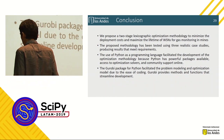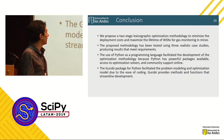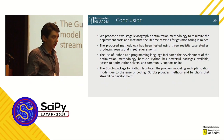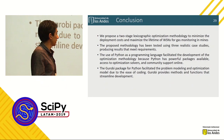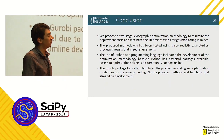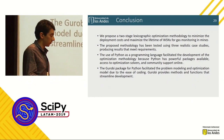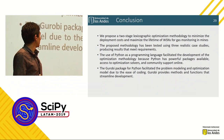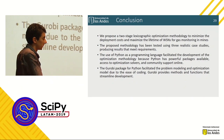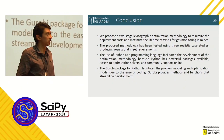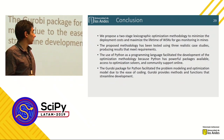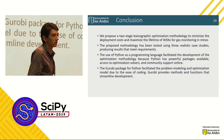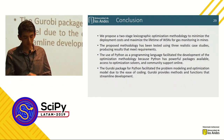In conclusion, we proposed a two-stage lexicographic optimization methodology to minimize deployment cost and maximize the lifetime of the network. We used three realistic case studies — three mines — to validate our approach. The use of Python as a programming language facilitated the development of our optimization for several reasons: Python has powerful available packages, access to several optimization solvers such as Gurobi, and community support online. The Gurobi package for Python also facilitated the modeling of the problem.